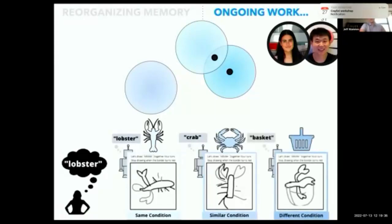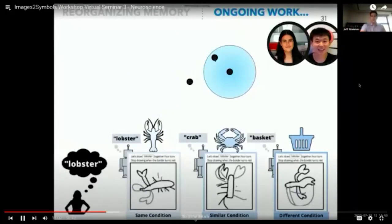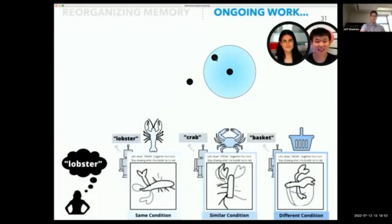And then the different condition nudges you towards something completely incoherent, like basket in this case. So you're going to end up probably somewhere in no man's land where the drawing isn't going to be of anything that anyone would recognize. If we take those away, what this yields is that the similar condition will hopefully give us the most memorable representation of the object. And that was the prediction that we were testing.